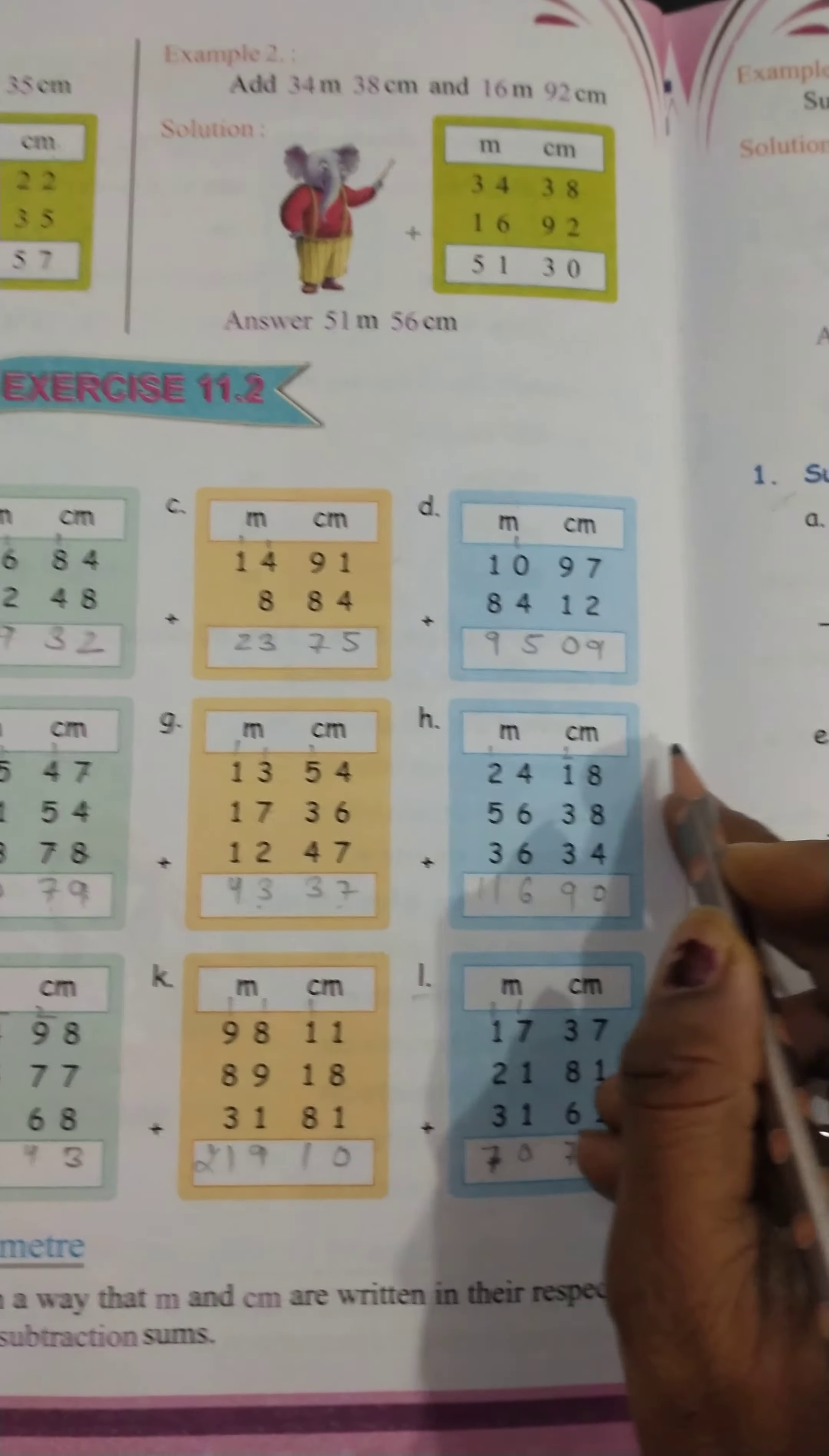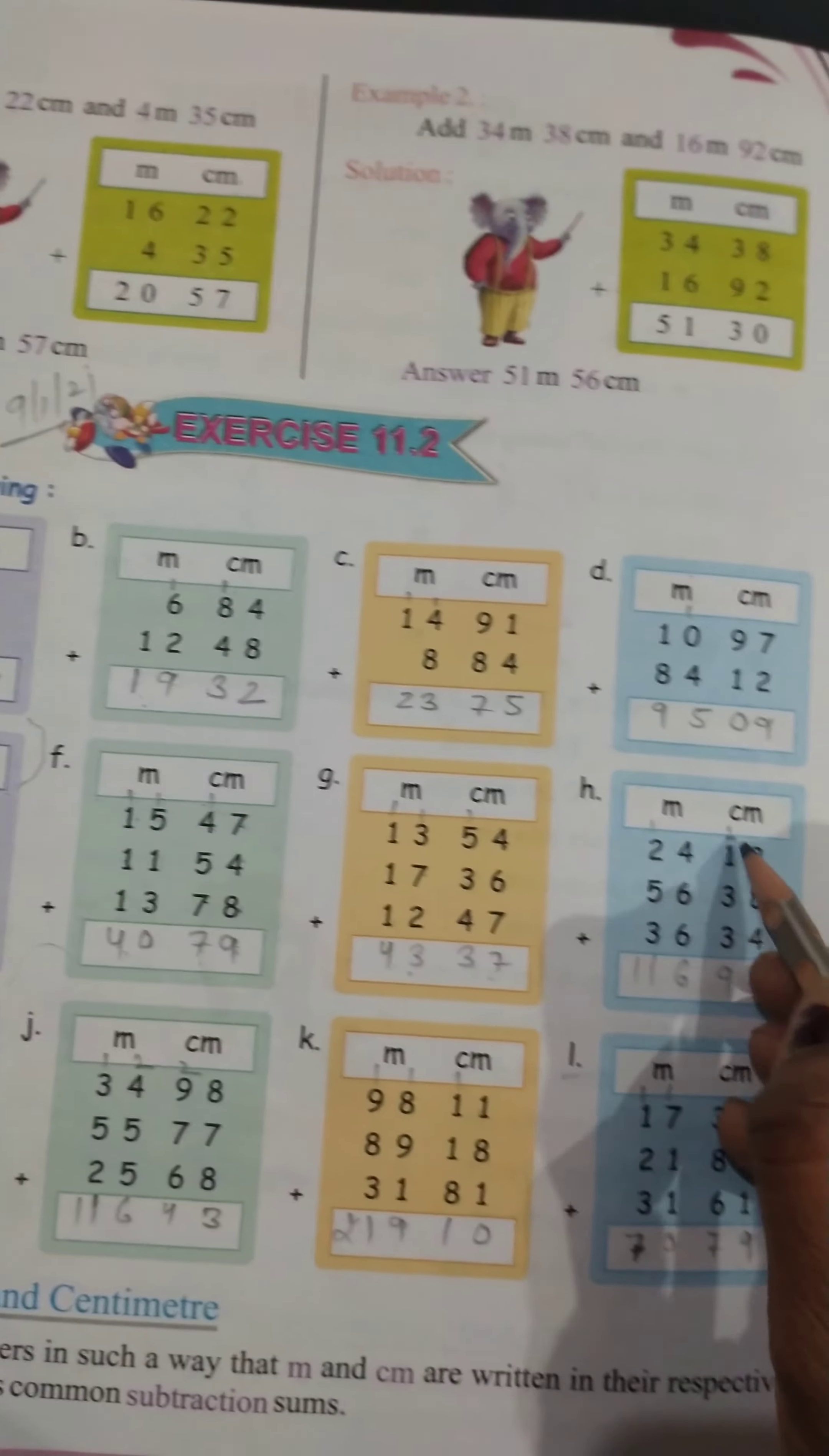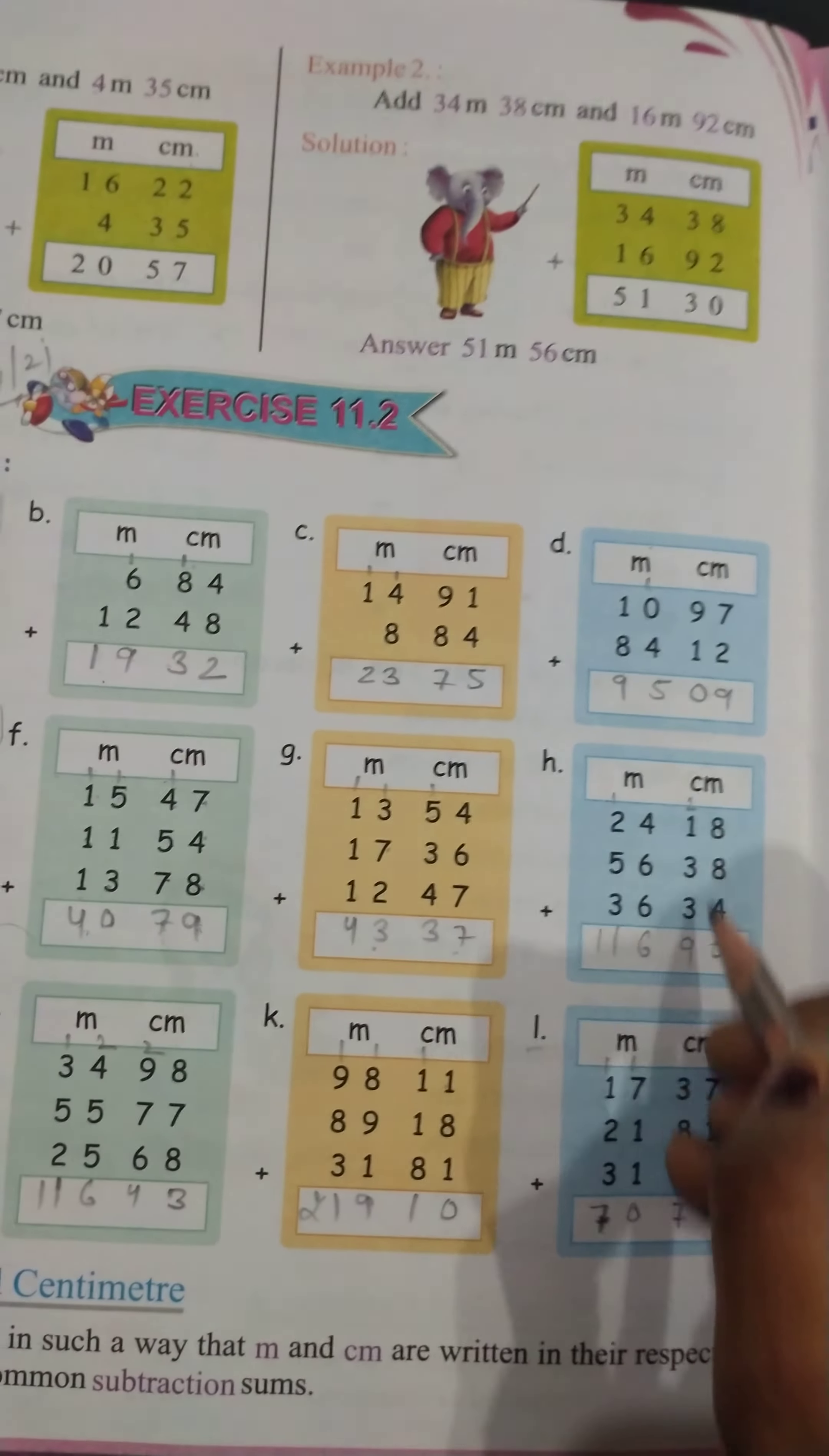8 plus 8, 16. 16 plus 4, 20. 20 come 2 carry. 1 plus 3, 4. 4 plus 3, 7. 7 plus 2 is equal to 9.